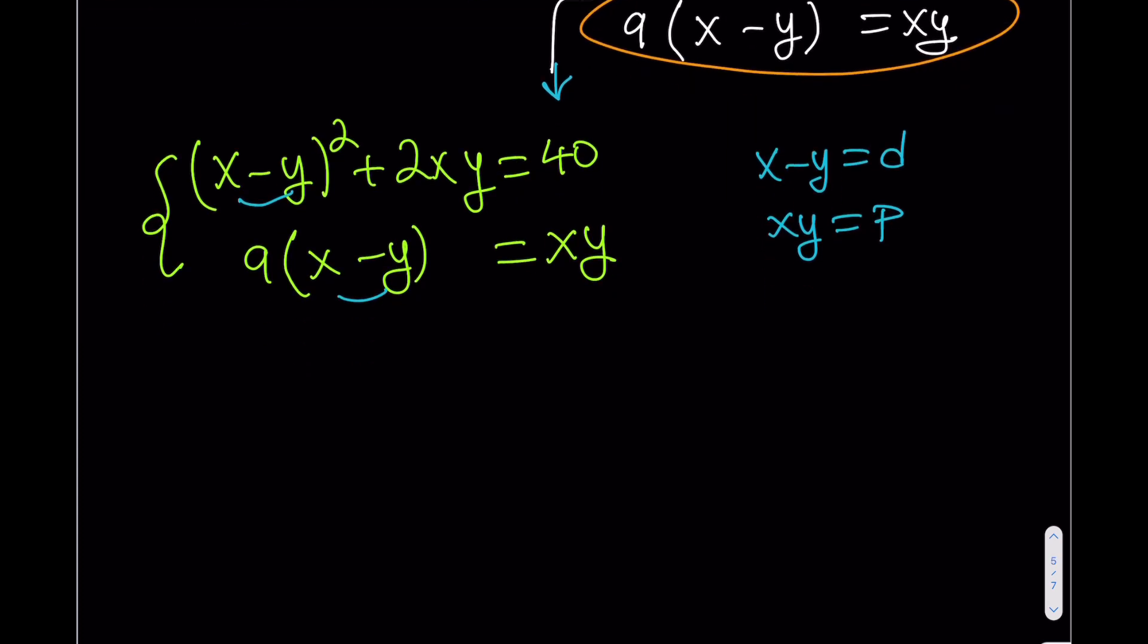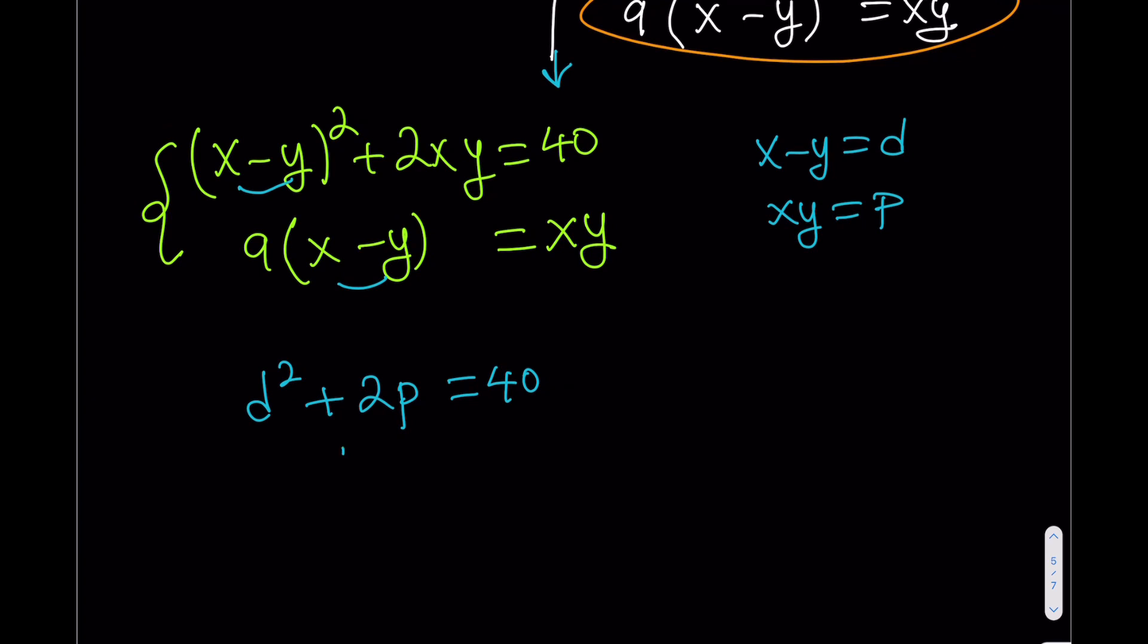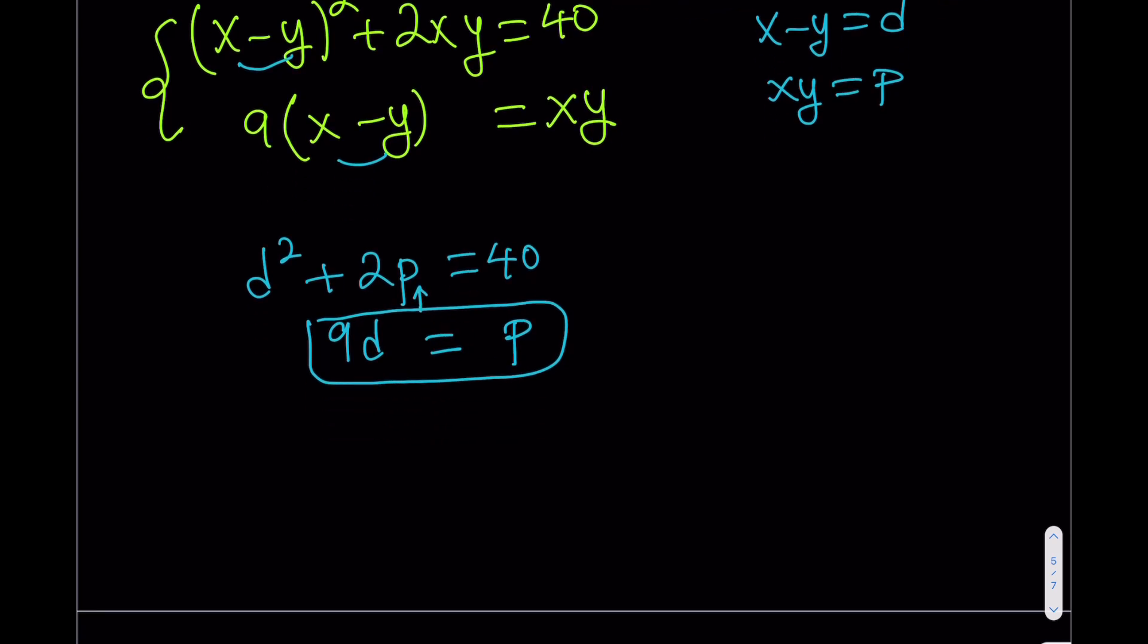Now I'll be getting something like this: D squared plus 2P equals 40, and then this is 9D equals P. That's amazing. Why? Because now I got P in terms of D. I can use substitution. Go ahead and plug that in, and you're good to go.